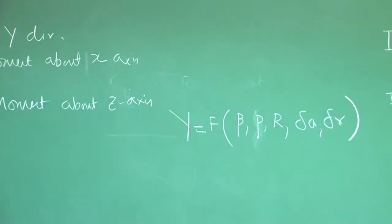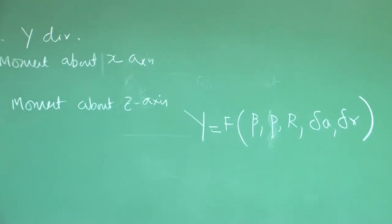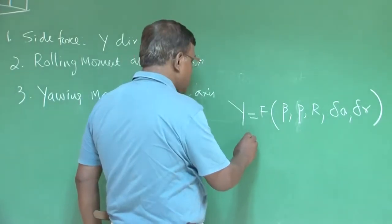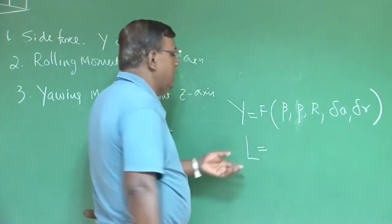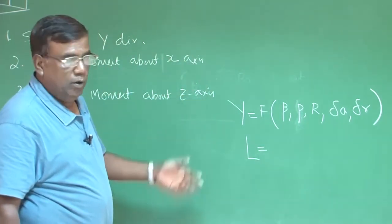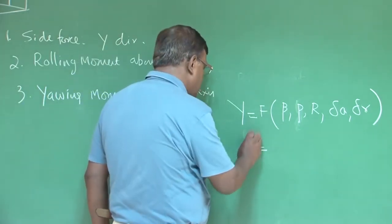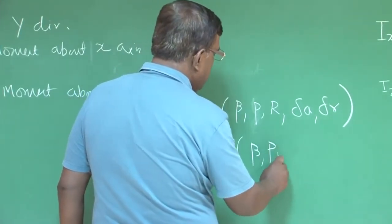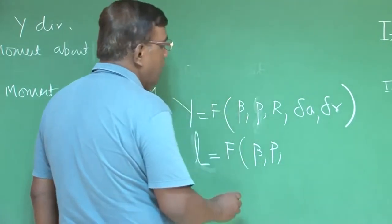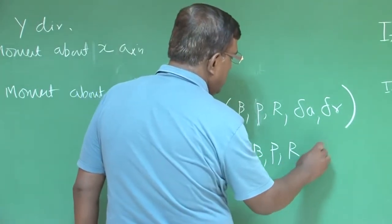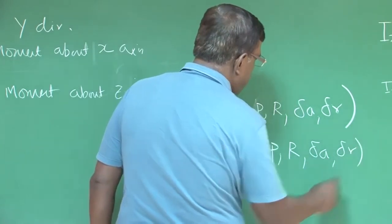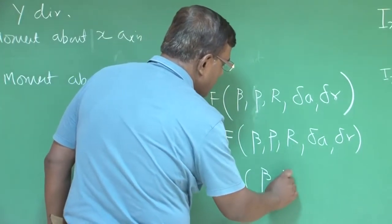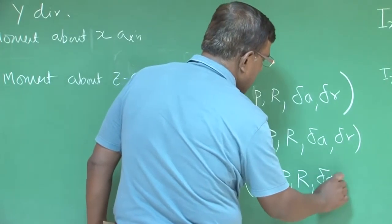We are talking about small angle and small perturbations. Similarly, rolling moment l (not to be confused with lift) is a function of beta, roll rate p, yaw rate r, aileron deflection delta_a, and rudder deflection delta_r. Yawing moment is again a function of beta, p, r, delta_a, and delta_r.